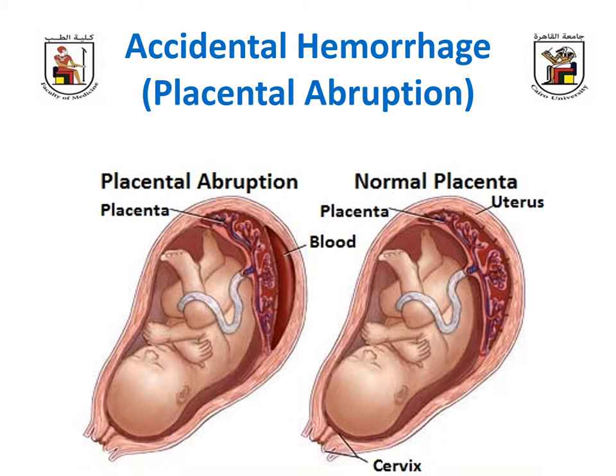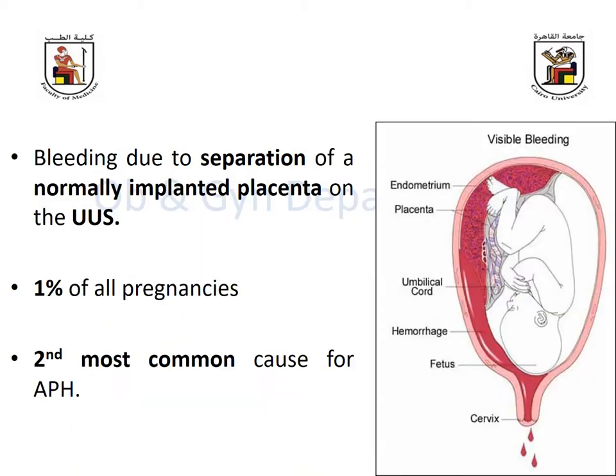As seen in the diagram, the placenta is in the upper uterine segment, and in the other diagram we can see a retroplacental hematoma — a collection of blood due to placental separation. This is bleeding due to separation of a normally implanted placenta in the upper uterine segment.